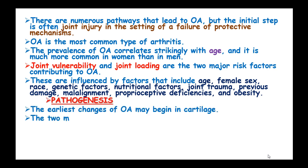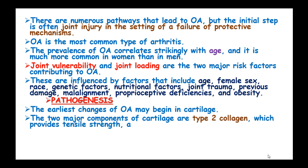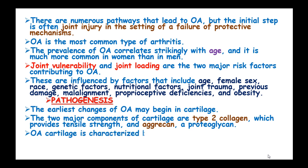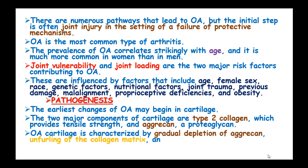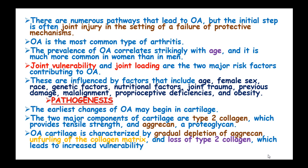The earliest changes of osteoarthritis may begin in the cartilage. The two major components of cartilage are type 2 collagen, which provides tensile strength, and aggrecan, which is a proteoglycan. Osteoarthritis cartilage is characterized by the gradual depletion of aggrecan, fraying of the collagen matrix, and loss of type 2 collagen, which leads to increased vulnerability.